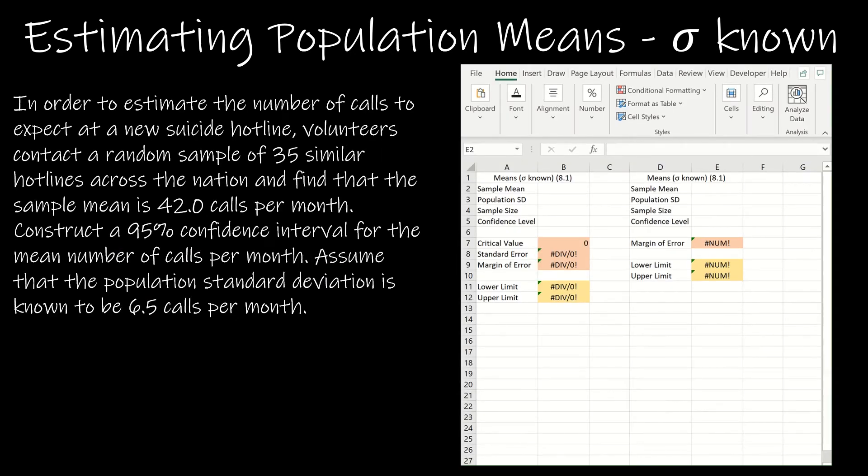I want to talk to you now about how to use Excel. And if you'll notice, I have two different columns set up. They're both for Section 8.1. One of them includes critical value and standard error. And the other one just goes straight to margin of error. So we're going to talk about how I set both of these up. If you'll notice, both have sample mean, population standard deviation, sample size, and confidence level as inputs, because those are all of the things that we need.